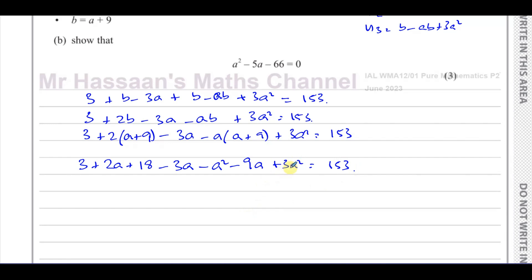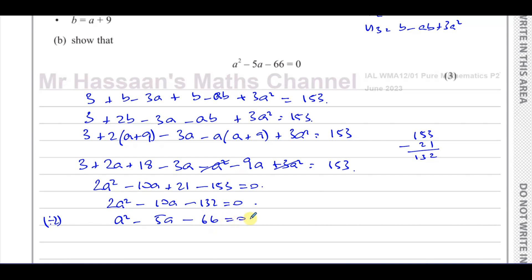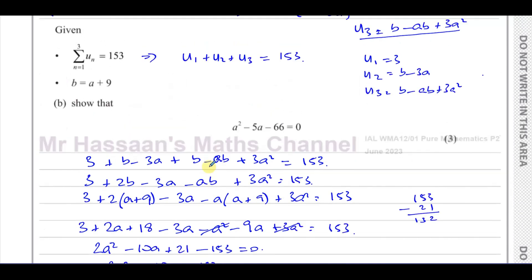Expanding the brackets: 3 plus 2A plus 18 minus 3A minus A squared minus 9A plus 3A squared equals 153. Collecting like terms: 3A squared minus A squared gives 2A squared; 2A minus 3A minus 9A gives minus 10A; 3 plus 18 gives 21. This gives 2A squared minus 10A plus 21 minus 153 equals 0, so 2A squared minus 10A minus 132 equals 0. Dividing by 2: A squared minus 5A minus 66 equals 0, which is exactly what we needed to show.